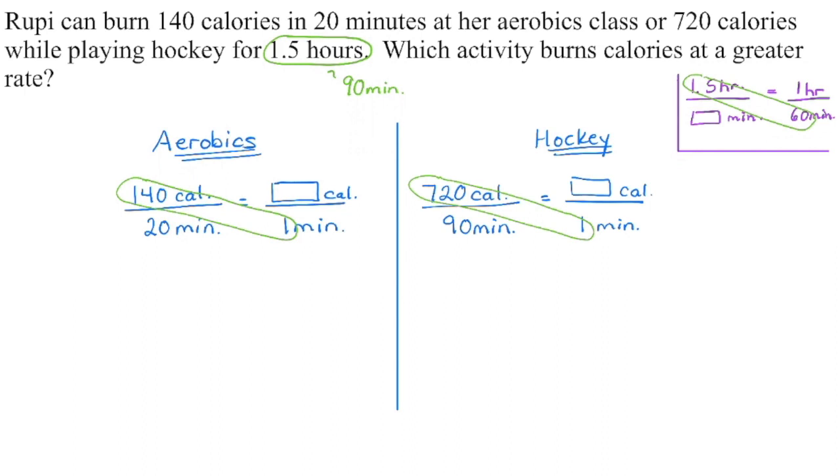Now, we need to get them into the same units. I know that 1.5 hours, an hour and a half, is 90 minutes. If you weren't sure, then you're going to go over to the side here and you're going to do another proportion. You're going to say 1.5 hours is how many minutes, knowing one hour has 60 minutes in it. Same unit, same line, and then you can see that you're going to multiply to get the equivalent number of minutes.